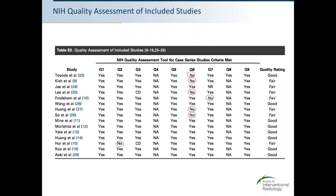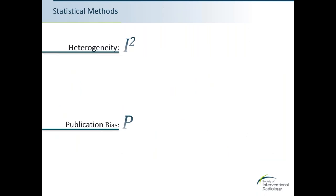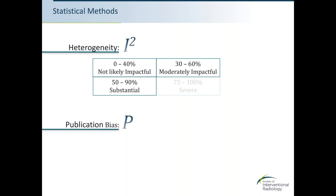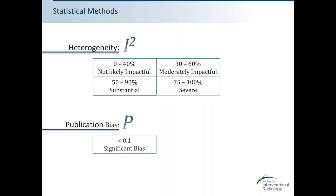Two statistics are critical for interpreting the results: heterogeneity (I²) and publication bias. Heterogeneity is displayed as a percentage: 0-40% is not likely important, 30-60% is moderate, 50-90% is substantial, and 75-100% represents the highest heterogeneity. There is some overlap and subjective interpretation between ranges. These statistics will be used to evaluate outcomes and regression analysis across the 15 included studies.